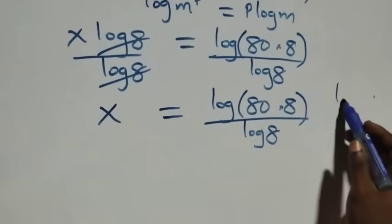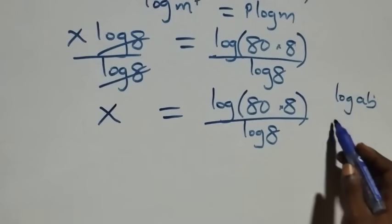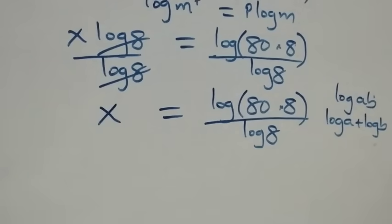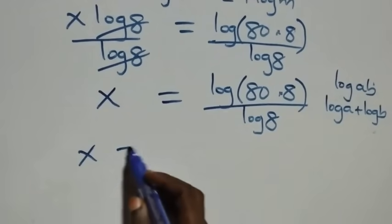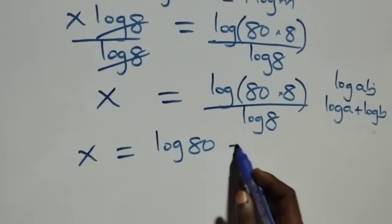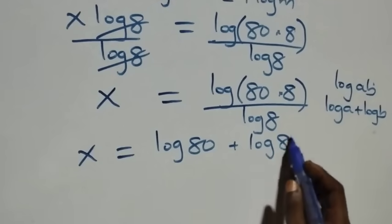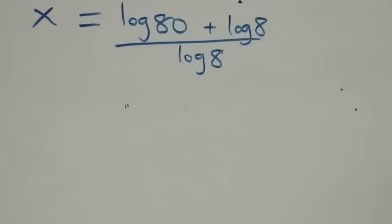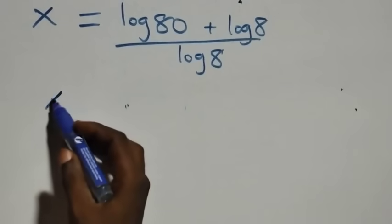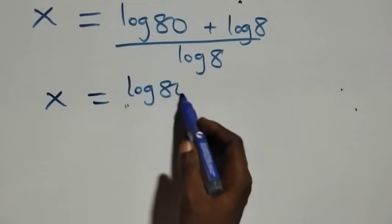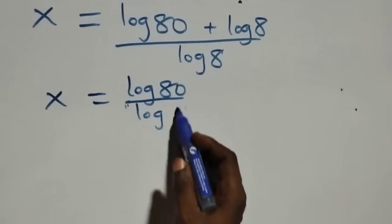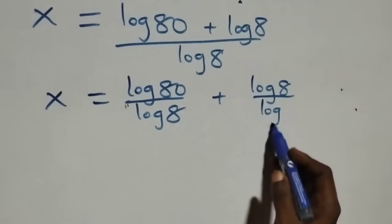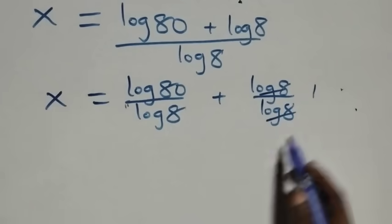What we have here follows the log product rule: log of A times B is the same thing as log A plus log B. So this becomes x equals to log 80 plus log 8, all over log 8. The next step: we separate this into two fractions, so x equals to log 80 over log 8 plus log 8 over log 8.